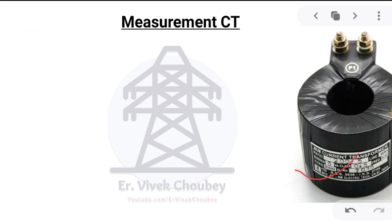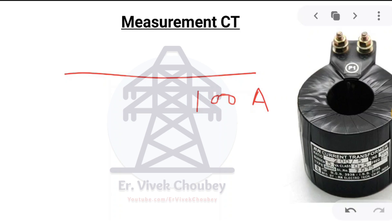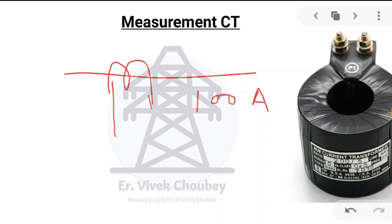First, let us come to the measurement current transformer — as you can see on the right hand side, this is the picture of a measurement current transformer. Simply speaking, what does a current transformer do? Let's say I have a line carrying 100 amperes of current, and I have an ammeter with a range of around 5 amperes. How will I be able to measure the current passing through this line? That is where the role of the measurement current transformer comes in. I will connect the primary coil of the current transformer to the line.